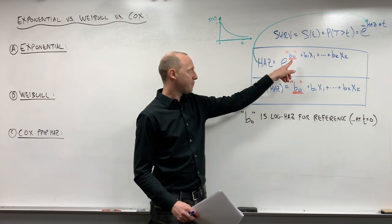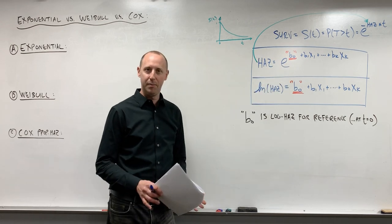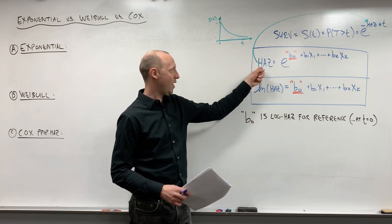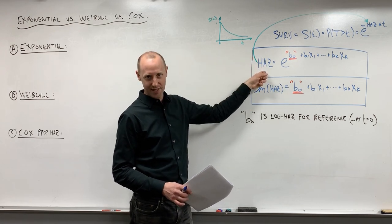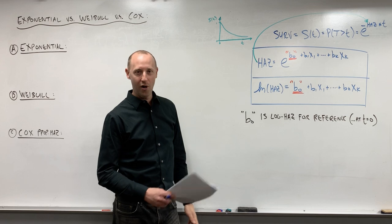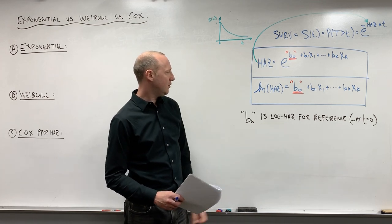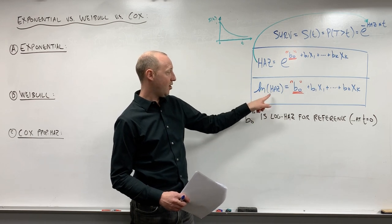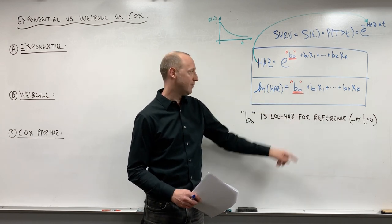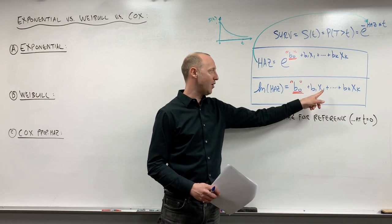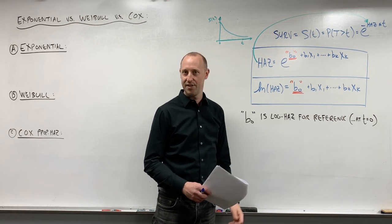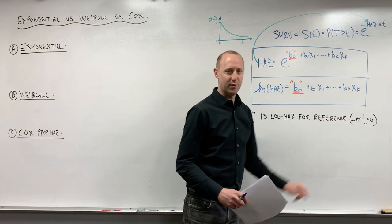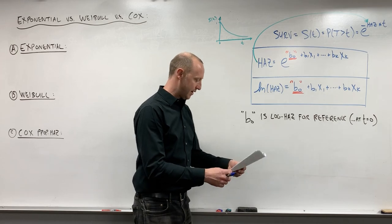Before we do, I just want to mention we can think of, if you remember b0, the intercept term, its kind of generic interpretation was the y value, or the left-hand side of the equation's value when all x's are zero. So in this way we can think of b0 as telling us the log hazard for the reference group, for either all numeric x is zero or the reference categories if they're categorical. And there I said, at time equals zero. I'll explain exactly what I mean by that.